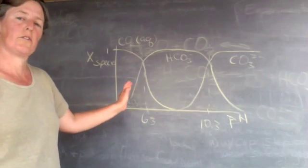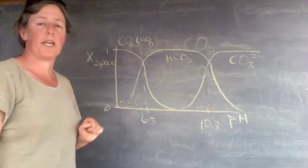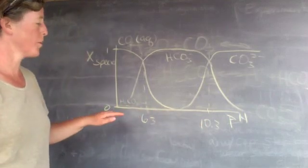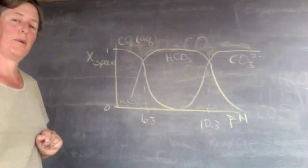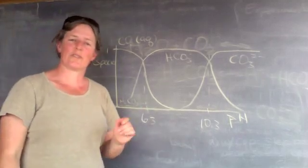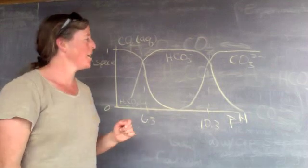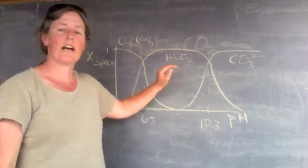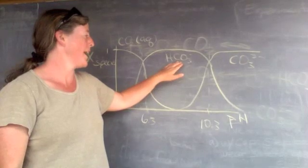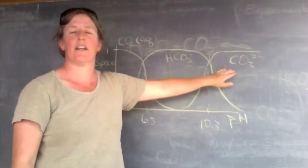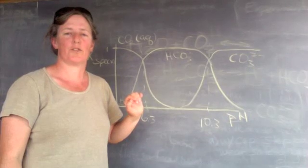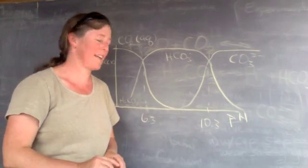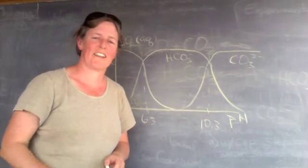So there is a very strong dependence of carbonate chemistry on pH. So that's where I think we'll leave it now. Except I'd like to say that the calcium ions in water are what react with the bicarbonate and the carbonate to form carbonate minerals like calcite or aragonite. Thanks for watching.